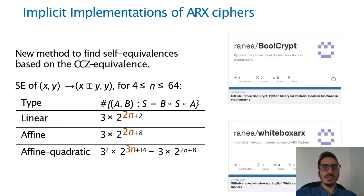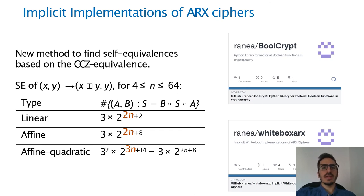To apply the implicit framework to ARX ciphers, we need to sample self-equivalences of the modular addition. In this work we also propose a new generic method to find self-equivalences, which we apply to the parameterized modular addition. We obtained for the first time self-equivalences of this operation, and with these self-equivalences we can now build implicit implementations of ARX ciphers.